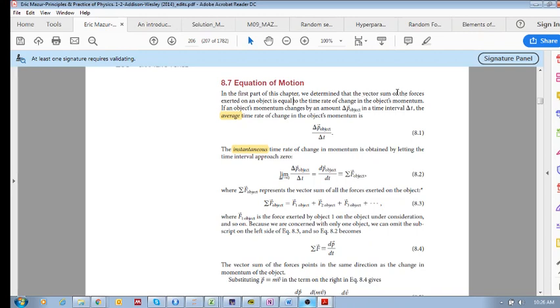This vector sum of forces is equal to the time rate of change in the object's momentum. So the object changes momentum over a specific time, and that is equal to the vector sum of the forces. In terms of the average rate of change of the object's momentum, we can look at delta p over delta t.